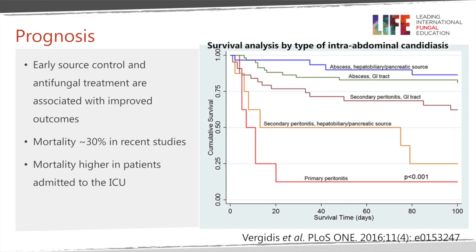Regarding prognosis, early source control and antifungal treatment are associated with improved outcomes. Mortality remains quite high — as high as 30%, and even higher in ICU patients — even with modern surgical techniques. Mortality is higher with peritonitis and diffuse infection, whereas it is lower in the setting of an abscess, where infection is more localized and easier to manage.